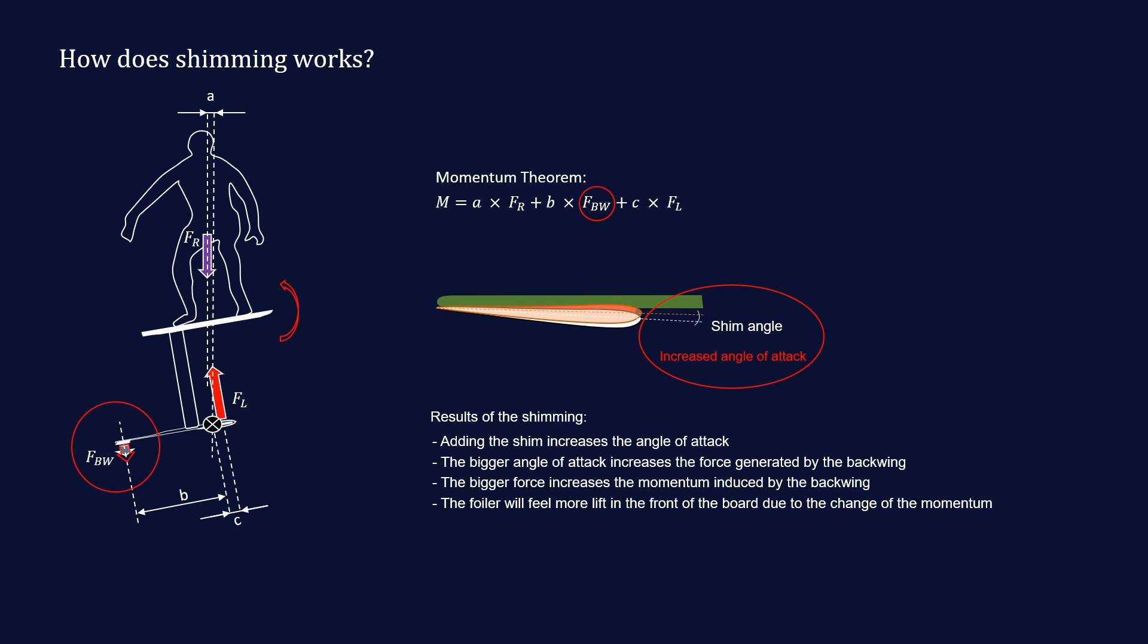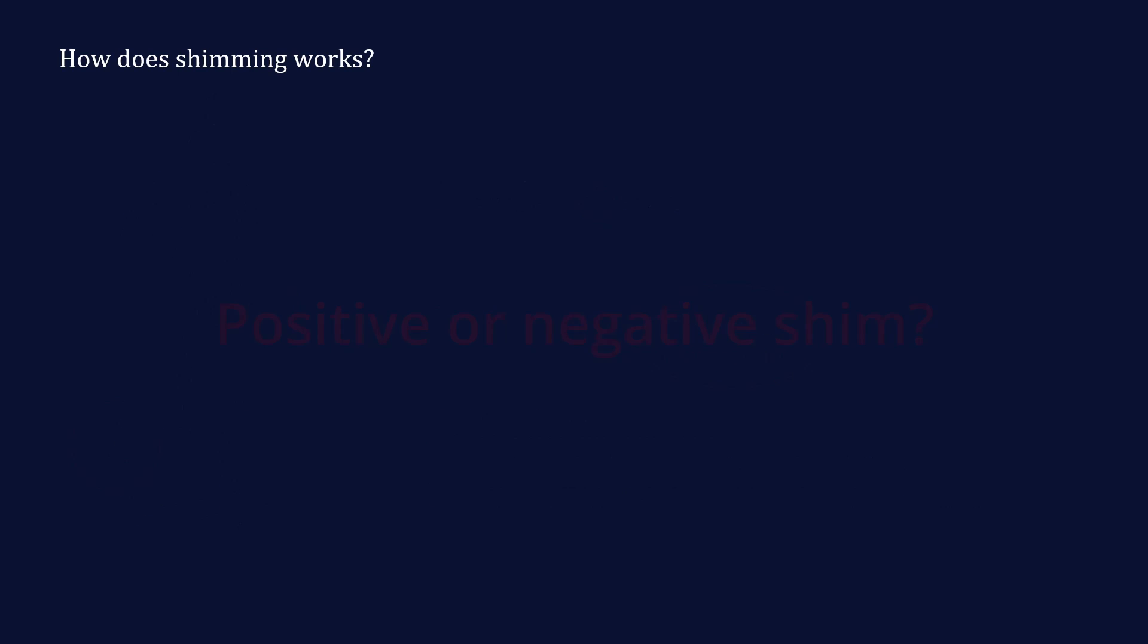Depending on in which direction you want to trim your setup, you can make use of negative or positive shims with different angles. As there is quite often a confusion between positive and negative shims, I put together a small overview that should help you to choose the correct shim. As mentioned earlier, the first thing we have to distinguish is if the back wing is mounted underneath or on top of the fuselage.